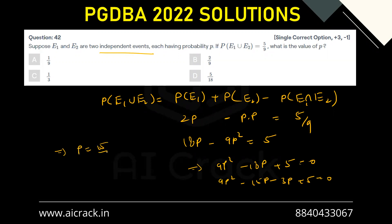P equals 15 by 9, which is not possible, or p equals 3 by 9, that is 1 by 3. So C is the correct answer.